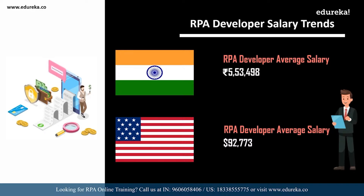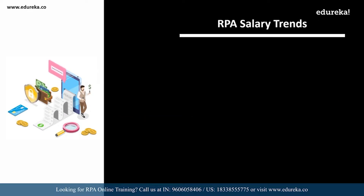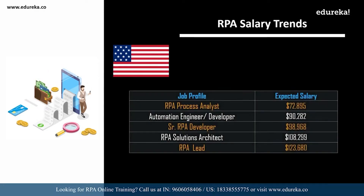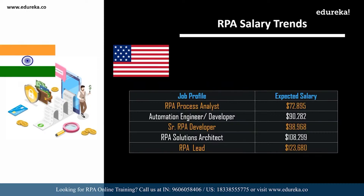Apart from being an RPA developer, there are various other related positions. In India: an RPA process analyst can expect around 5,48,000 per annum; an automation engineer or developer can expect 5,90,000; a senior RPA developer around 7,69,000; an RPA solutions architect around 10,11,000; and an RPA lead around 11,26,000. In the USA: an RPA process analyst can expect around 72,000 dollars; an automation engineer or developer around 90,000 dollars; a senior RPA developer around 98,000 dollars; an RPA solutions architect around 1,00,000 dollars; and an RPA lead around 1,23,000 dollars.